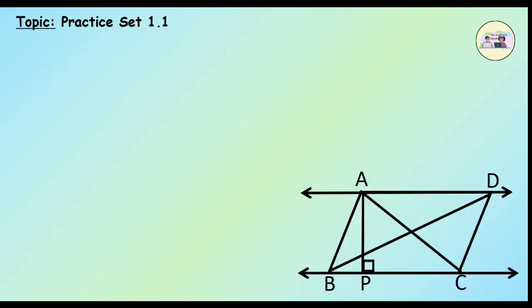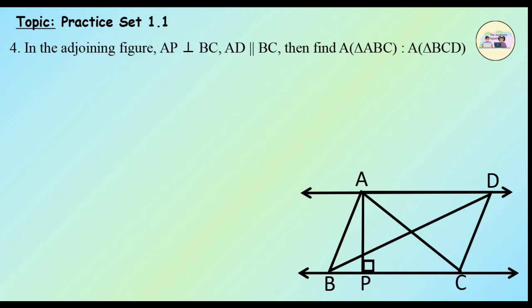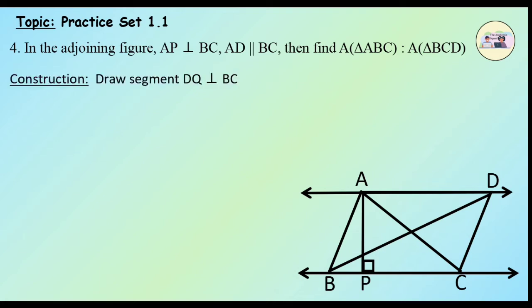Question 4. In the adjoining figure, AP is perpendicular to BC, AD is parallel to BC. Find the ratio: area of triangle ABC to area of triangle BCD. Triangle BCD is an obtuse angle triangle, so we need to construct its height. Let's construct segment DQ perpendicular to BC.